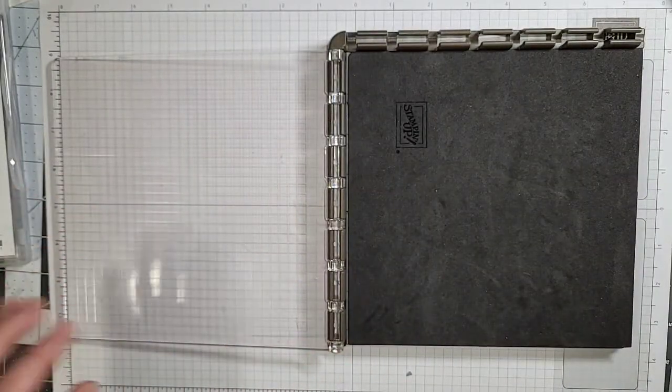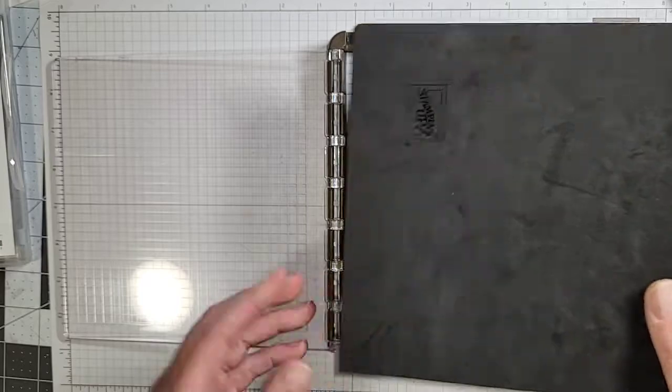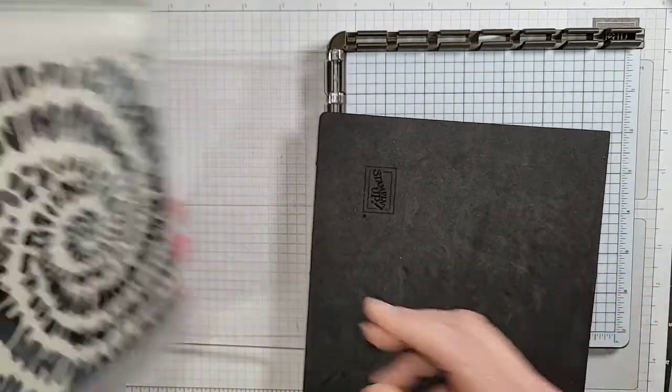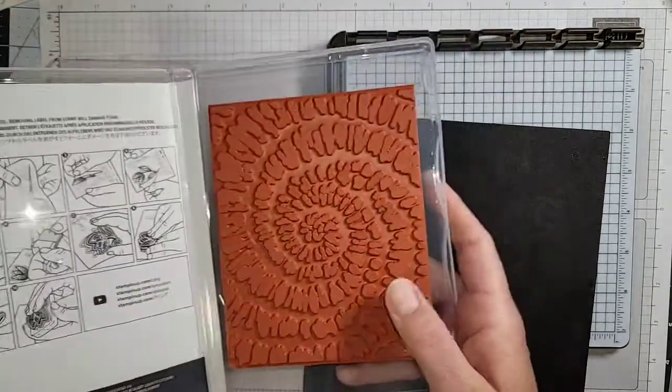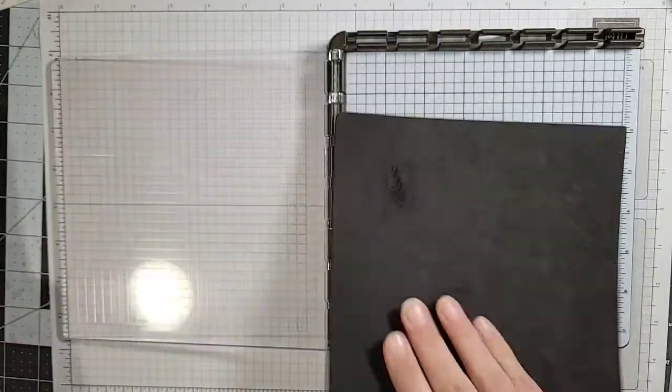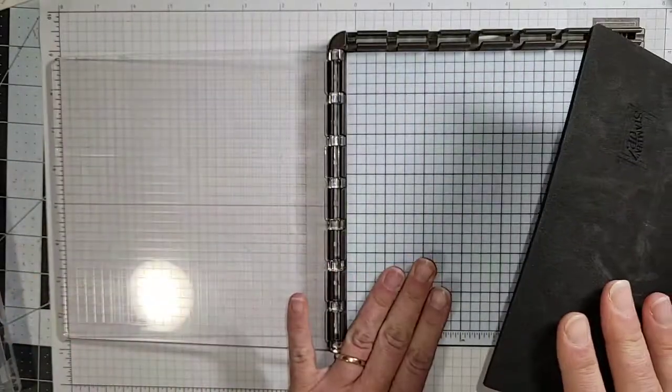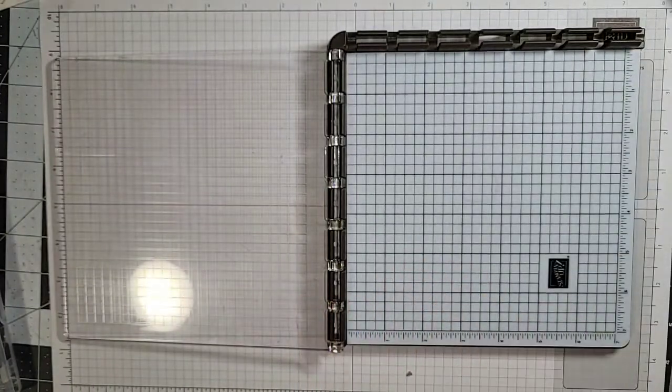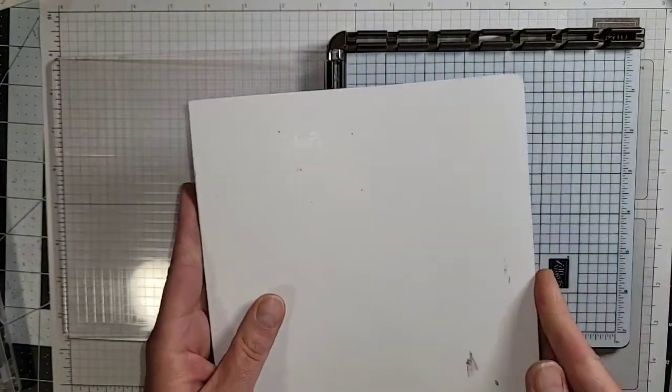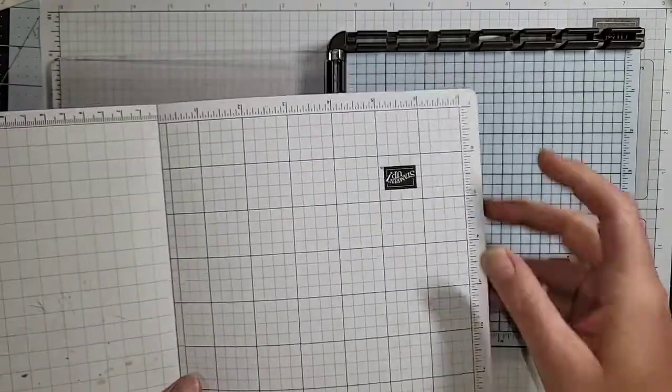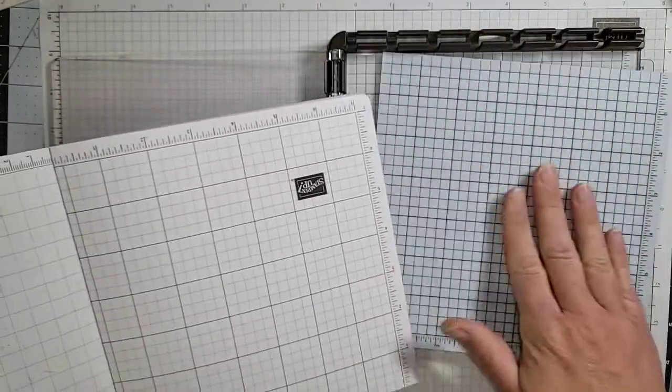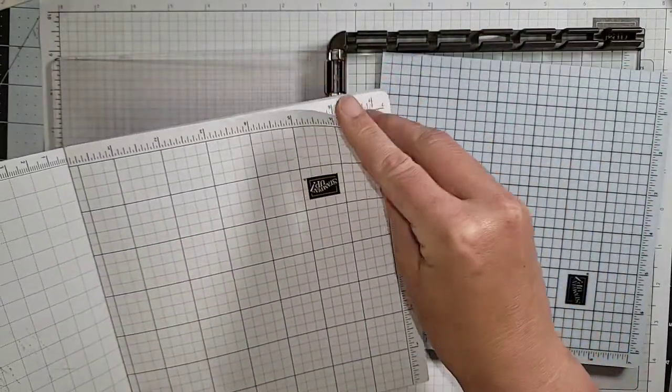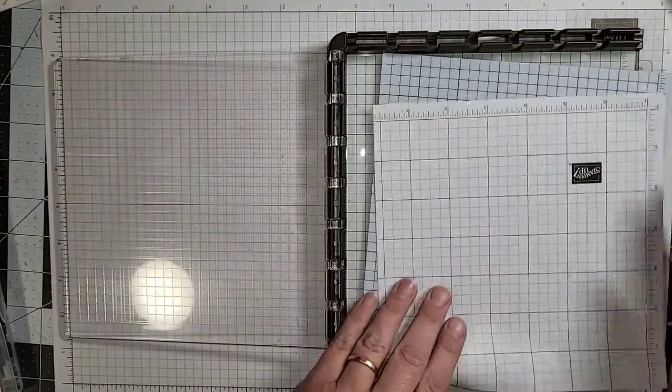We also do not need this foam mat because the stamp set that we're using is the Spiral Die which is a red rubber stamp. You need this if you're using photopolymer with your Stamparatus. Before I get started I'm going to put one of my paper liners just so I don't get this all mucked up. I'm just going to take one of these out.